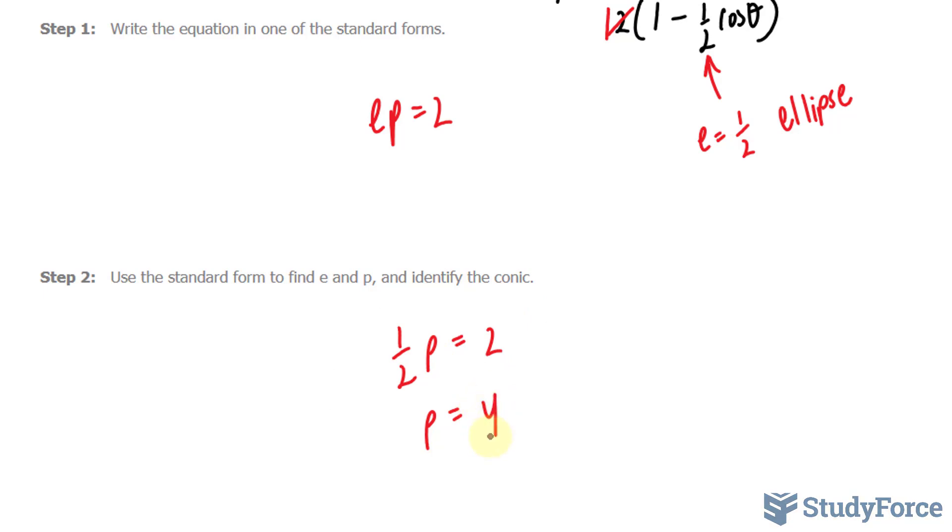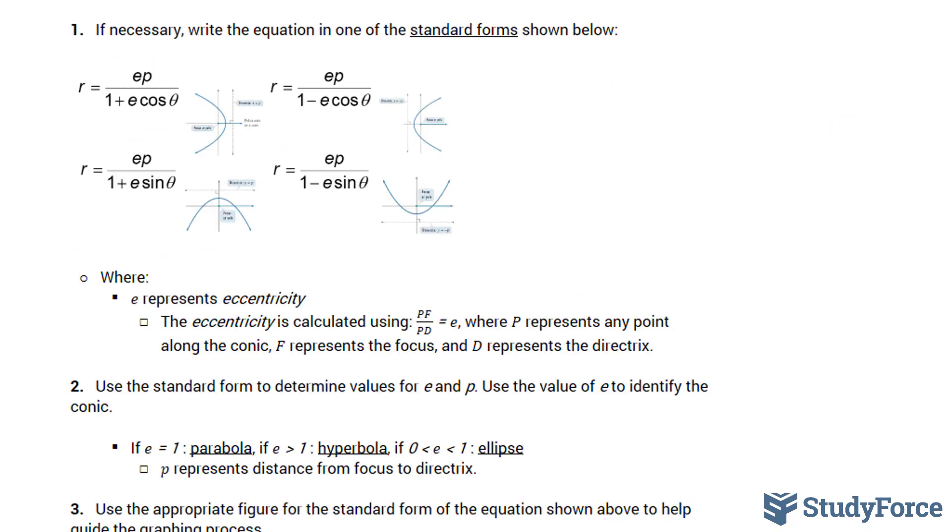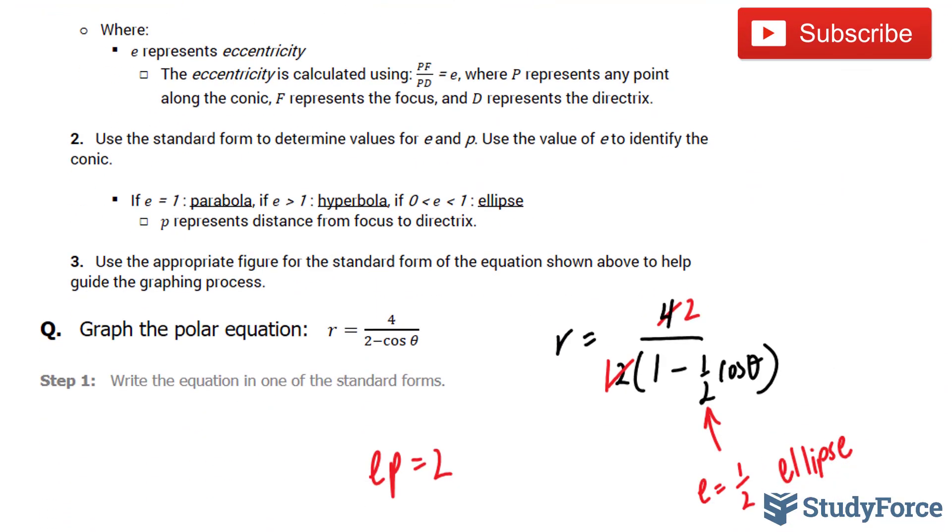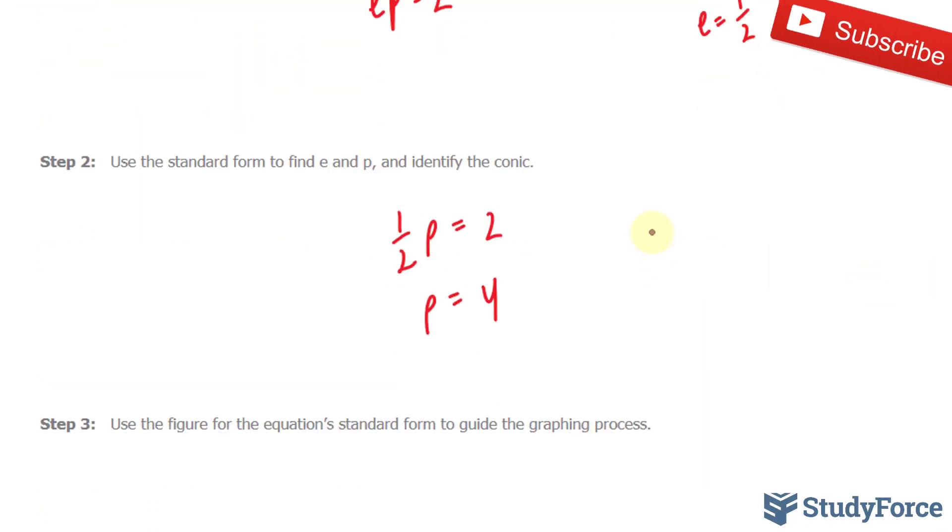The reason why p is important is because it's related to the directrix, and if you zoom in into this graph, the relationship between e and p is shown right here. What's interesting about our equation is that it actually looks like this one. And because it looks like this one, you'll notice that the major axis is horizontal. And because the major axis is horizontal, the directrix will be vertical. In our particular case, the directrix is vertically up, therefore it's x equals minus p. So our directrix is at x equals negative 4.